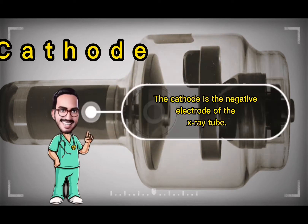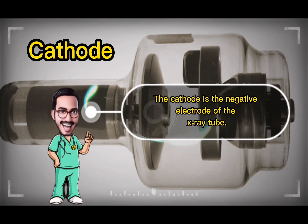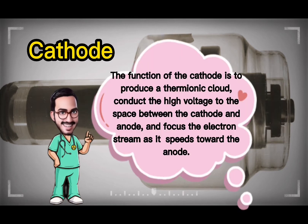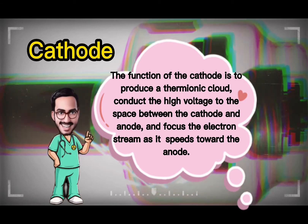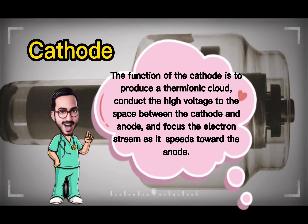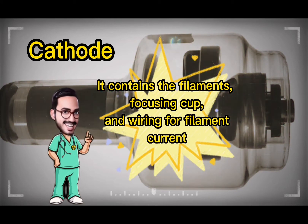The cathode is the negative electrode of the x-ray tube. The function of the cathode is to produce a thermionic cloud, conduct the high voltage to the space between the cathode and anode, and focus the electron stream as it speeds toward the anode. It contains the filaments, focusing cup, and wiring for filament current.